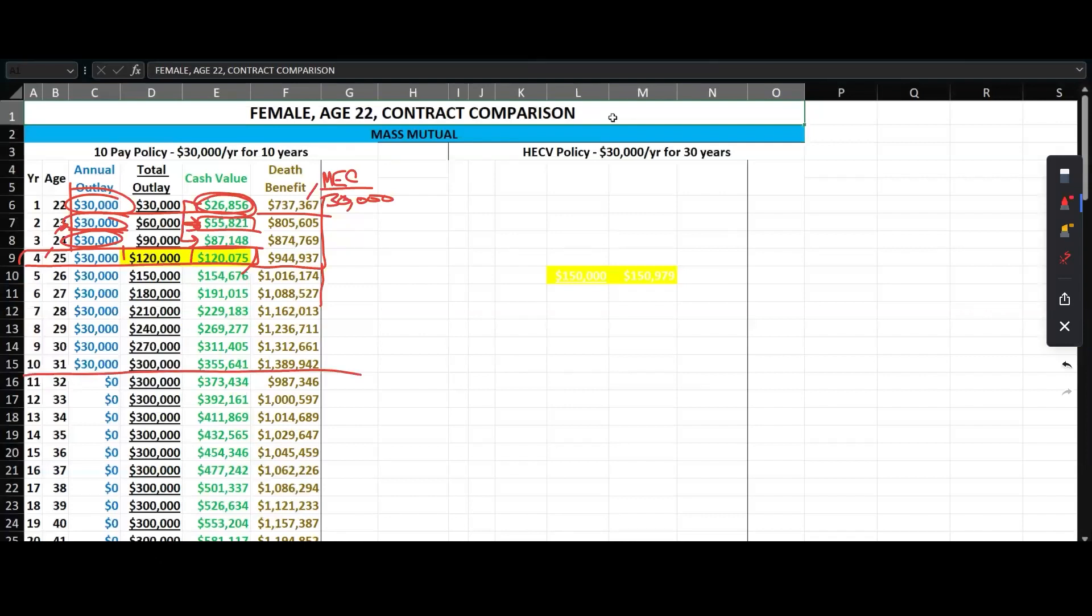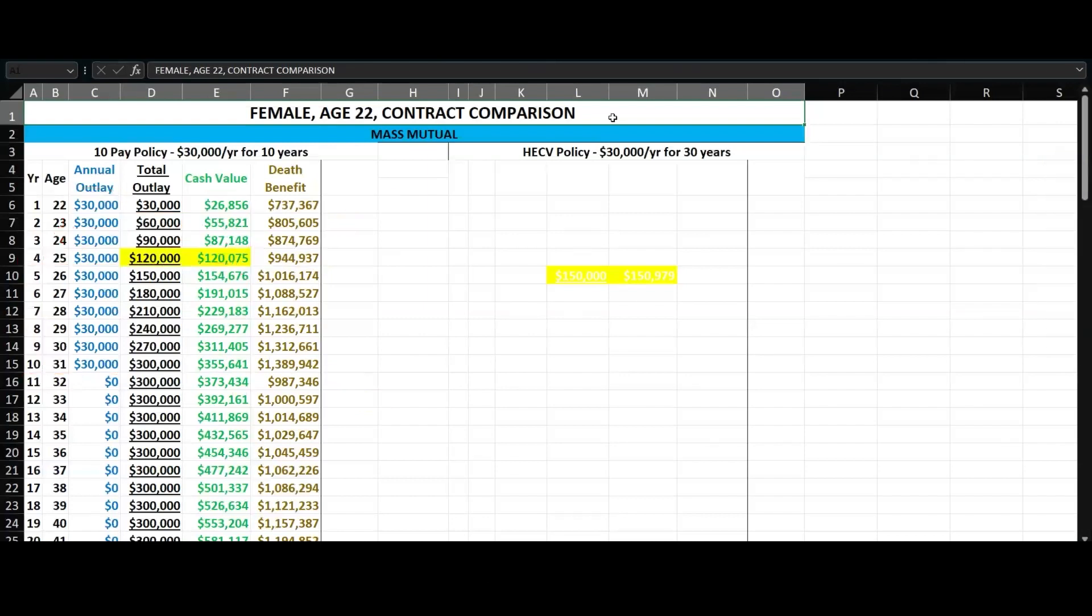She stops the funding after 10 years. Why the death benefit drops here is because we dropped the term rider in this case. That's exactly why. So that's your 10 pay policy.